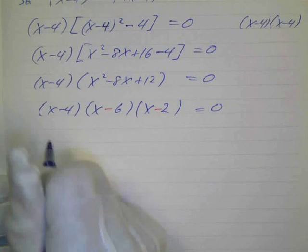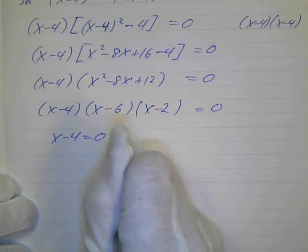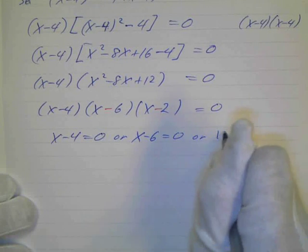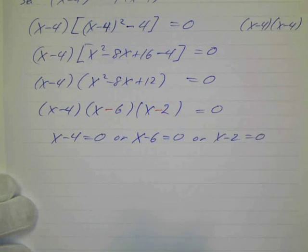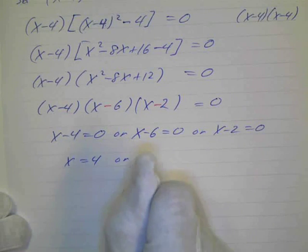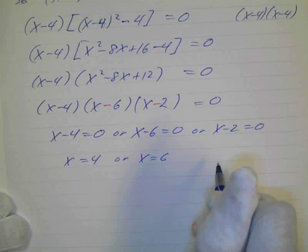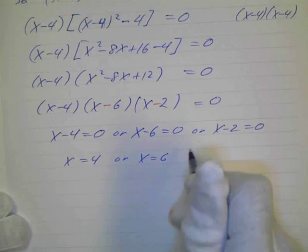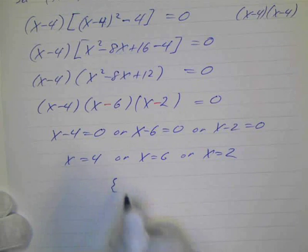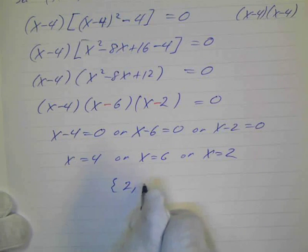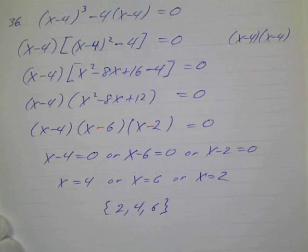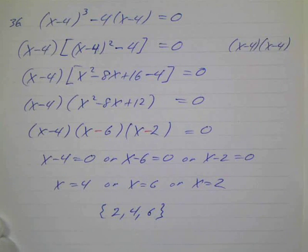So now you know that either x minus 4 equals 0, or x minus 6 equals 0, or x minus 2 equals 0. And if I add 4, I get x equals 4, or x equals 6, or x equals 2. So my solution set would be 2, 4, 6. And there you go. Okay. All right.